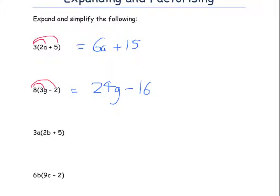3a in brackets 2b plus 5. Same theory — we're going to multiply 3a by 2b. Remember, if you've watched a Collecting Like Terms video: 3 times 2 is 6, and a times b is just ab, so it's 6ab. And 3a times 5 — well, 3 times 5 is 15, so it's 15a.